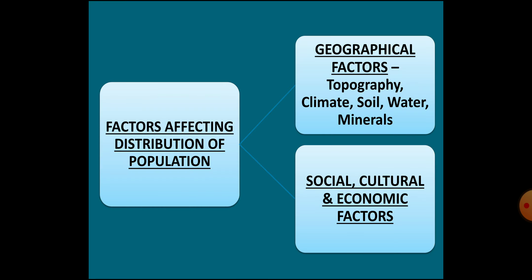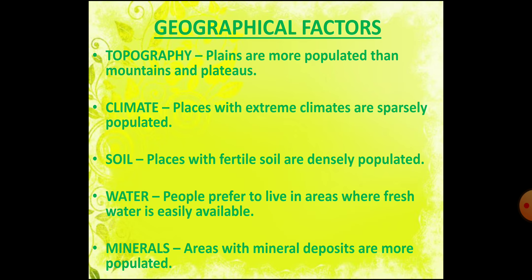Now let's understand the various factors responsible for the uneven distribution of population. These can be broadly classified into two groups: one, geographical factors — which include topography, climate, soil, water and minerals; and two, social, cultural and economic factors. Regarding topography, plains have a high density of population compared to mountains and plateaus, as plains are suitable for farming, manufacturing and service activities. For example, the Indo-Gangetic Plains are among the most densely populated areas, whereas the Himalayas, Alps and Andes have low density.